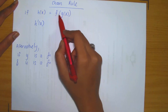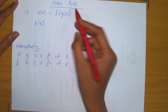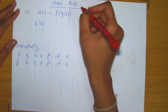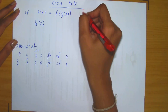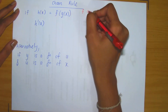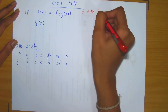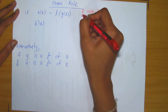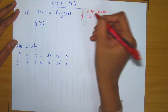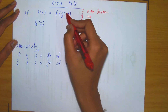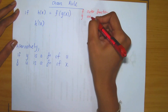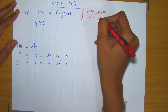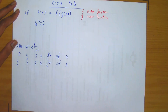In this composition, we've got two functions f and g. Based on the way it is written, we can refer to f as the outer function, and we can refer to g as the inner function — for the obvious reason that g is on the inside and f is on the outside. So we've got an outer and an inner function in this composition.